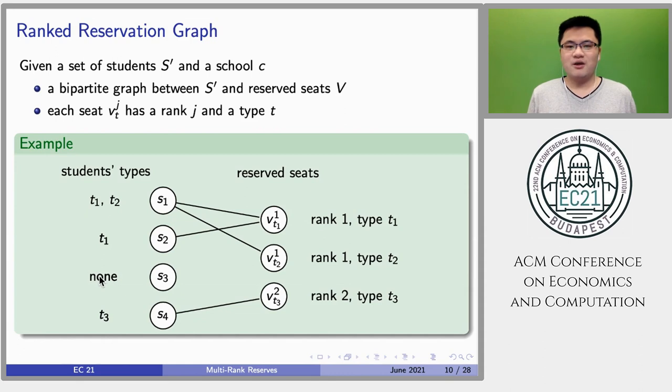Before we move on to the first property, maximal diversity, let me introduce some notations based on graph theory. Given one school c and a set of students S', a ranked reservation graph is a bipartite graph between the set of students S' and reserved seats. Each reserved seat has a rank and a type. There is an edge between one student and one reserved seat if the student has a corresponding type.